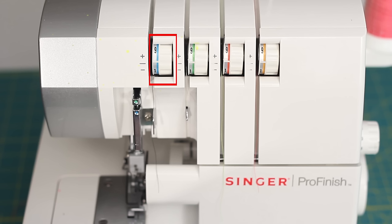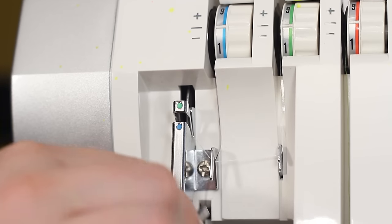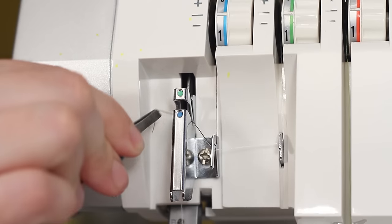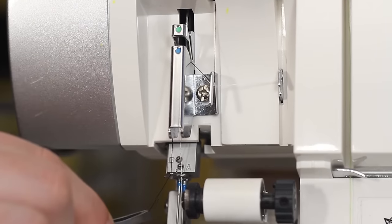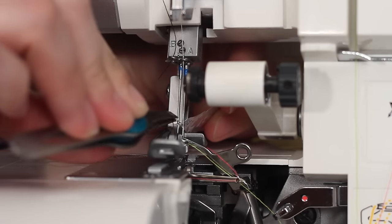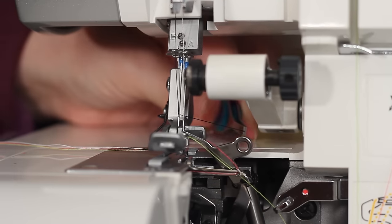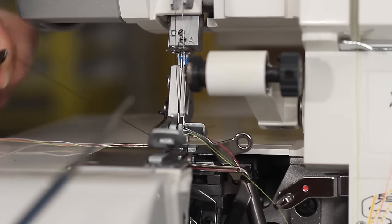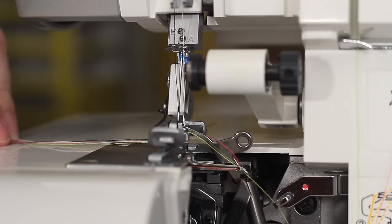Now to thread the left needle. For us, that's going to be the black thread. Pass it under the metal hook, up to the blue dot, and down to the little thread holder above the left needle. Again, grab your needle threader. After your needle is threaded, pass it under the presser foot, and off to the side with our other thread.